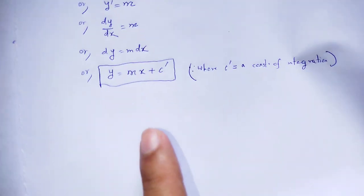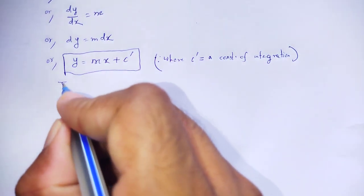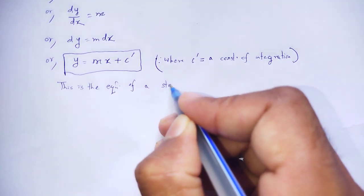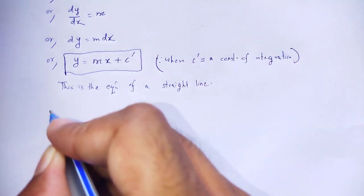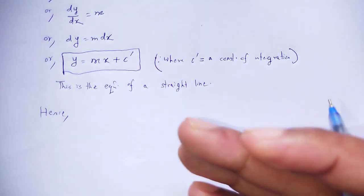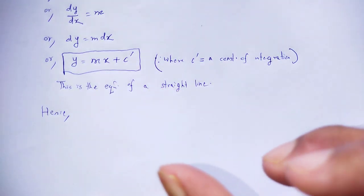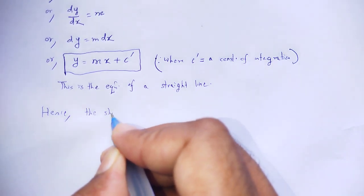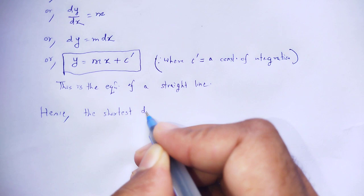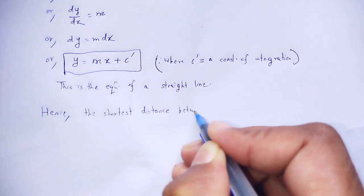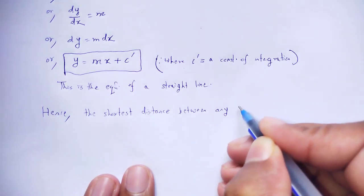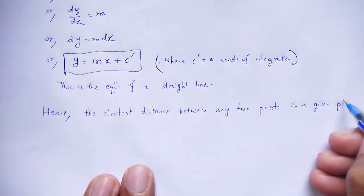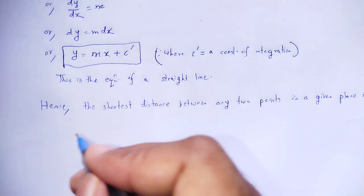y = mx + c' is the equation of a straight line. Hence the shortest distance between any two points in a given plane is a straight line.